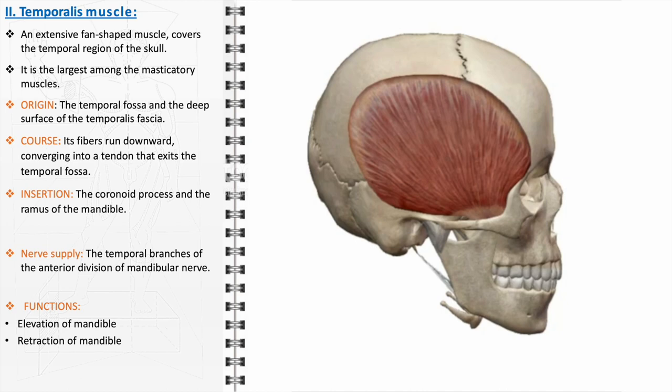In some medical procedures, such as reconstructive surgeries, the temporalis muscle may be used as a flap due to its size and vascular supply, highlighting its importance beyond masticatory functions. Although primarily involved in mastication, the temporalis muscle also plays a minor role in certain facial expressions, such as clenching the jaw in anger or concentration, demonstrating the interconnected nature of facial muscles.